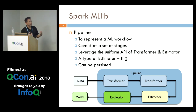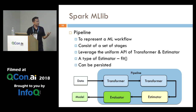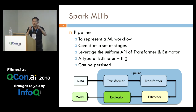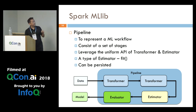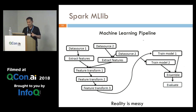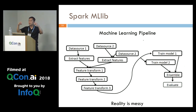With transformer, estimator, and evaluator, we can now build a pipeline. A pipeline consists of a bunch of these stages — in one example it does two transformers, but in your case it could be many more, and they run in a specific order that you define. Here's an example of a more complex pipeline where there are many transformers chained together like a workflow — two have to be completed before you go to the next one.